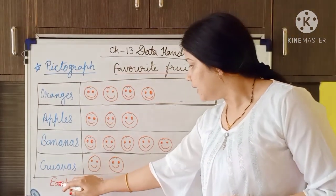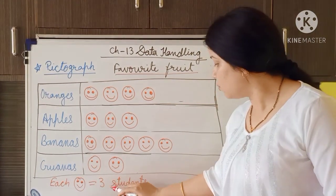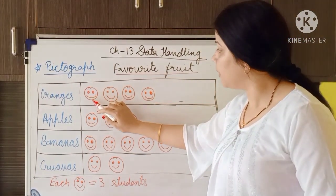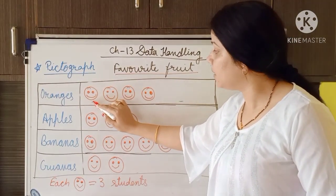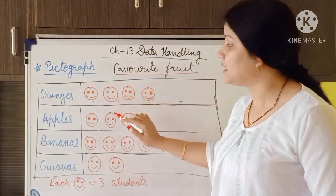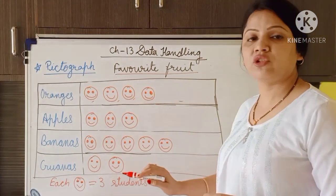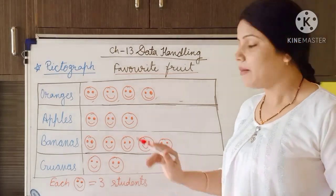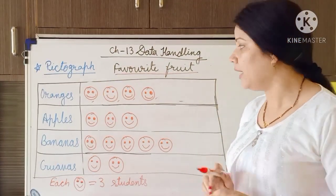Here it is written that each smiley is equal to three students. So if I have made one smiley here, that smiley means three students. Each smiley here means three students, and each smiley represents three students.